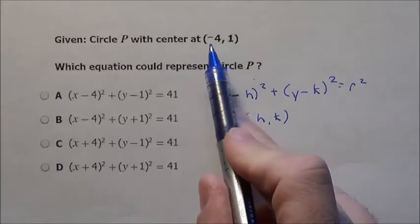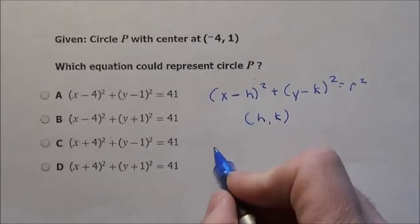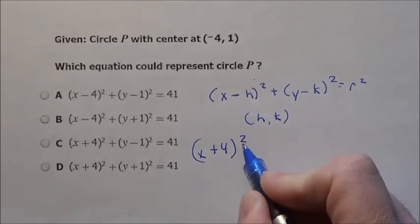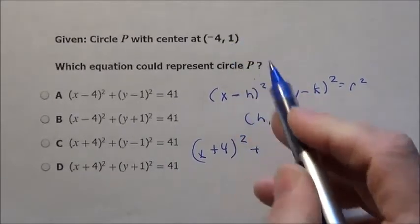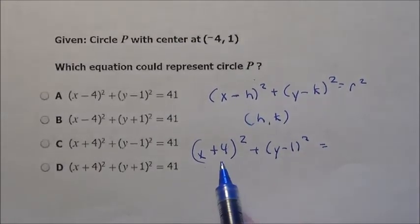Now, I told you that since it's negative 4 here, in the equation we're going to have to make it x plus 4 squared. Since it's just a 1, that will be y minus 1 squared equals the radius squared.